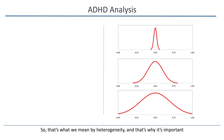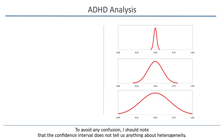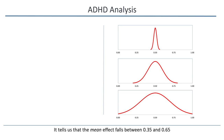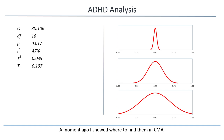To avoid any confusion, I should note that the confidence interval does not tell us anything about heterogeneity. The main effect is around 0.50, with a confidence interval of 0.35 to 0.65. The confidence interval is an index of precision, not an index of dispersion. It tells us that the mean effect falls between 0.35 and 0.65, but the dispersion of effects could look like any of these or anything else.